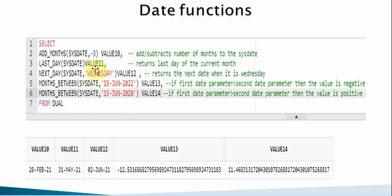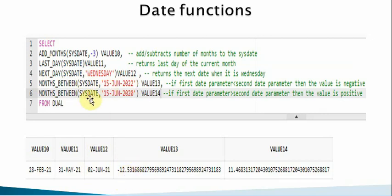The NEXT_DAY function takes a date and a day name as parameters. For example, NEXT_DAY(SYSDATE, 'WEDNESDAY') — since today is May 28th, the next Wednesday is June 2nd, so it returns June 2nd. The MONTHS_BETWEEN function takes two dates and returns the number of months between them. If the first date is less than the second, it returns a negative value; otherwise a positive value. For example, comparing a 2021 date to a 2022 date returns a negative number, while comparing SYSDATE to an earlier date returns a positive value.